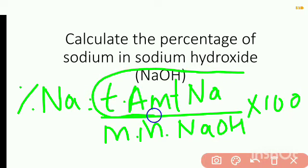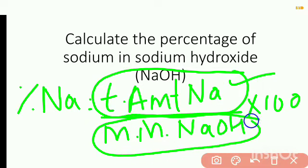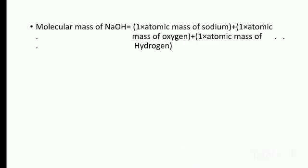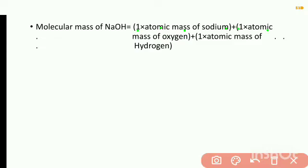Now, we have to find out the total amount of sodium and the molecular mass of sodium hydroxide. First, we will find out the molecular mass of sodium hydroxide: number of sodium atoms × atomic mass of sodium, plus number of oxygen atoms × atomic mass of oxygen, plus number of hydrogen atoms × atomic mass of hydrogen.